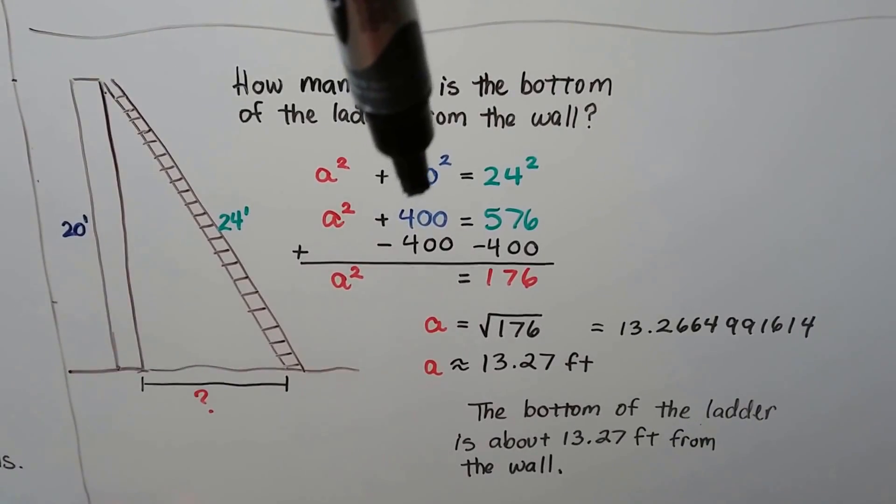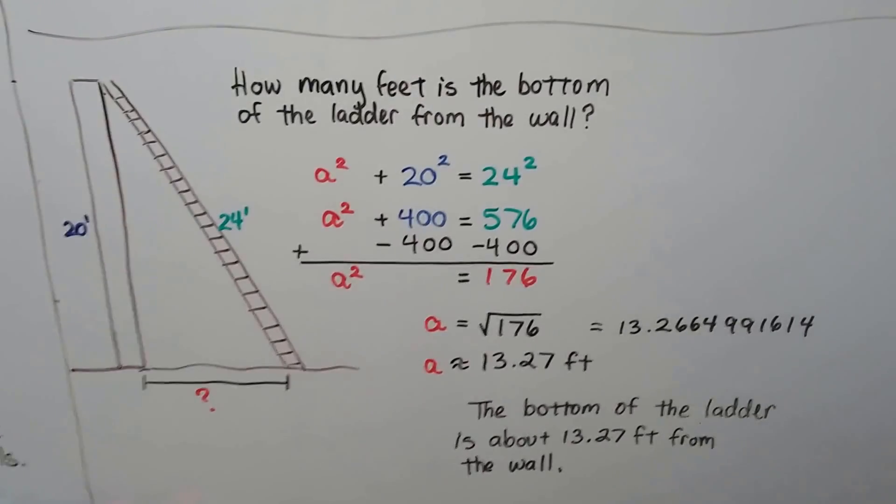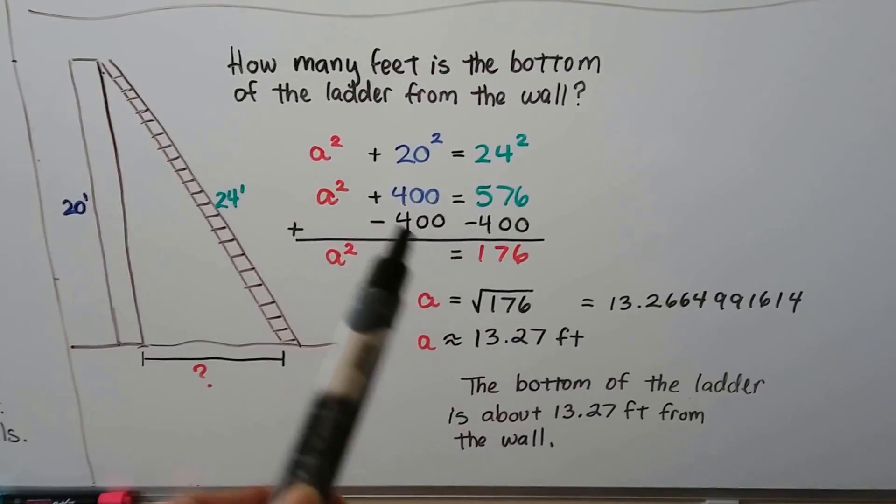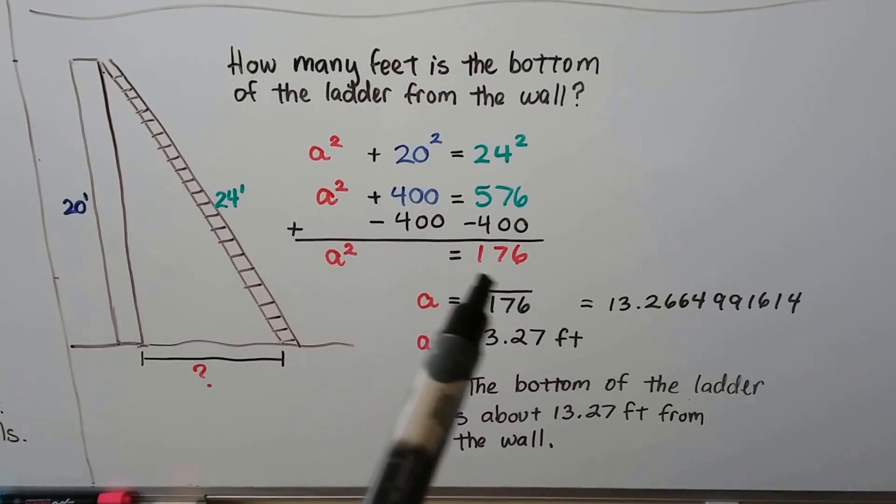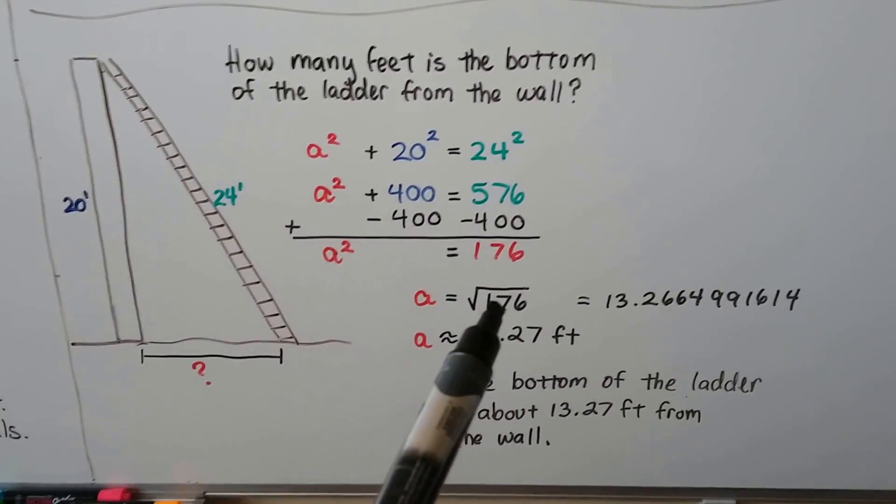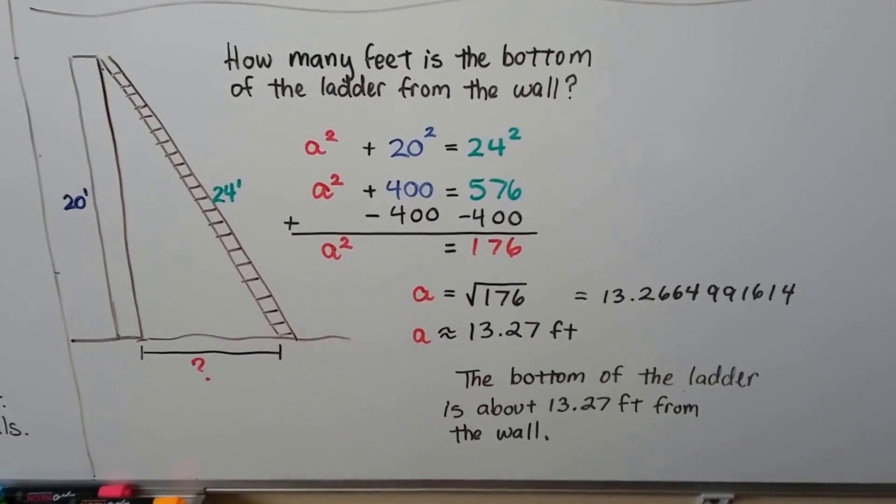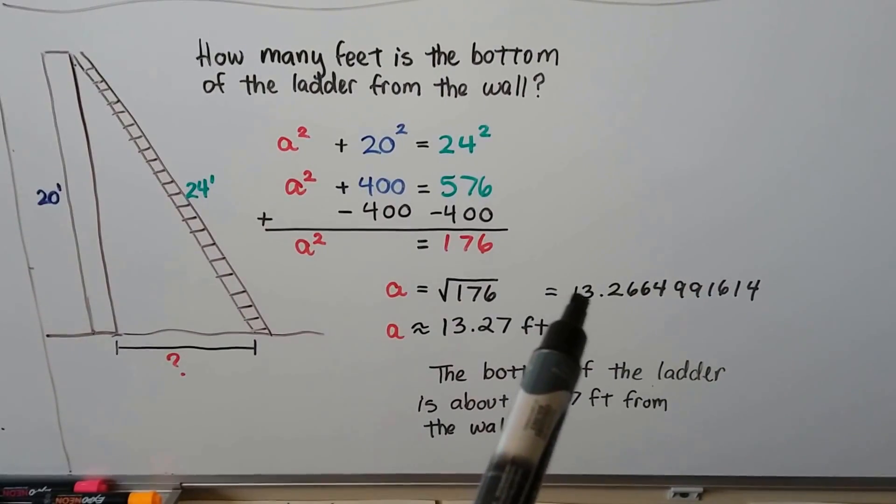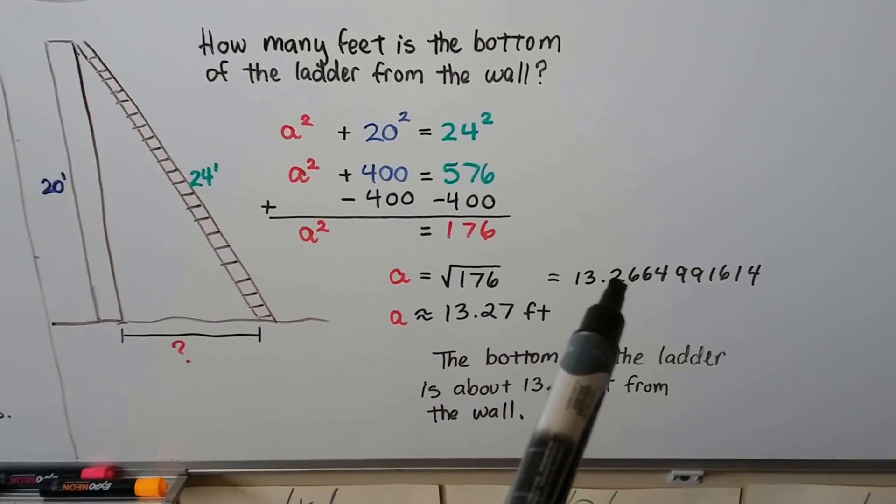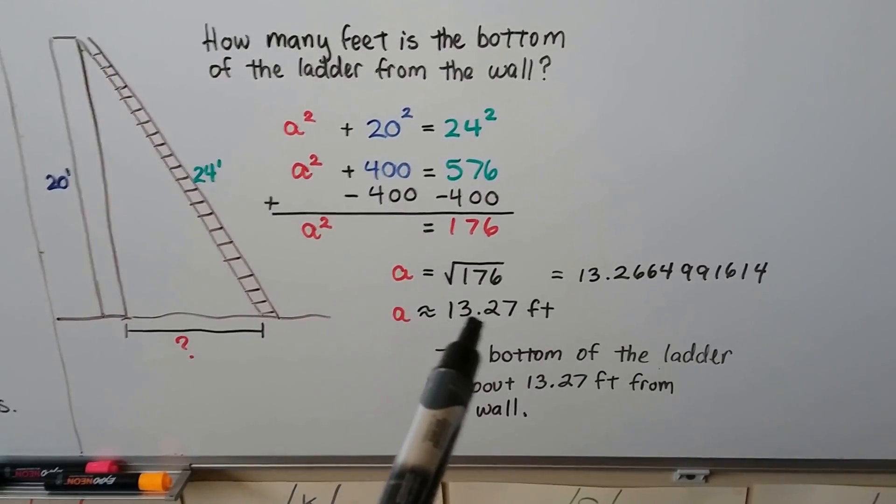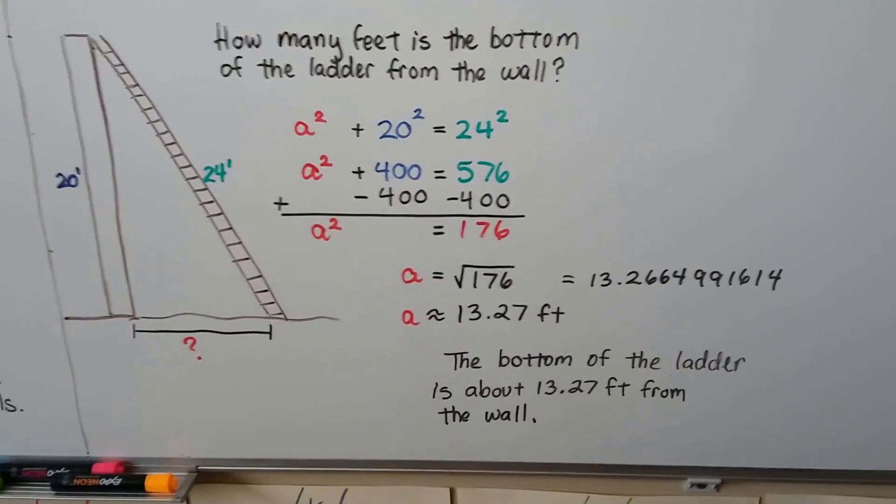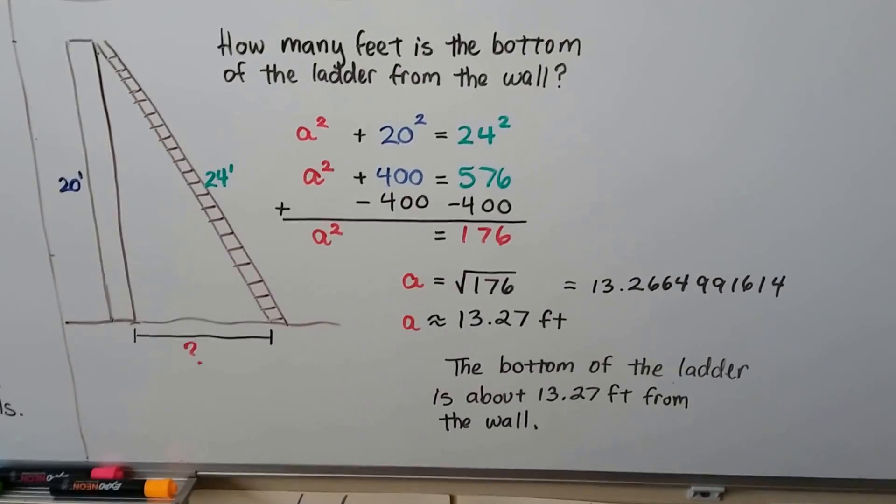Well, 20 times 20 is 400, and 24 times 24 is 576. We can eliminate this 400 by adding a negative 400 to both sides of the equation, creating a zero pair, and we'll get a squared equals 176. We can remove that little two exponent by putting a radical sign around the 176 and finding its square root. We do it on the calculator, and we get this nice long decimal number, which can be rounded to either 13.3, if we just round it to one place after the decimal, or approximately 13.27 feet. So, the bottom of the ladder is about 13.27 feet from the wall.